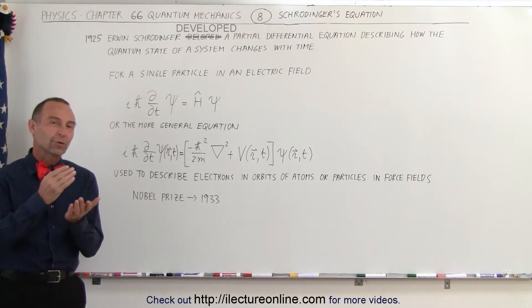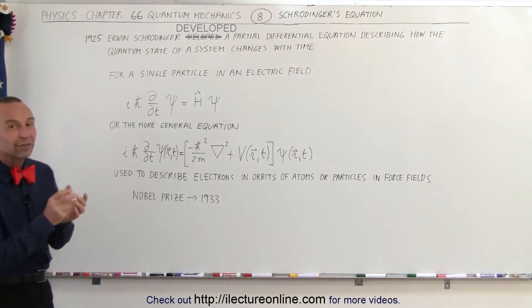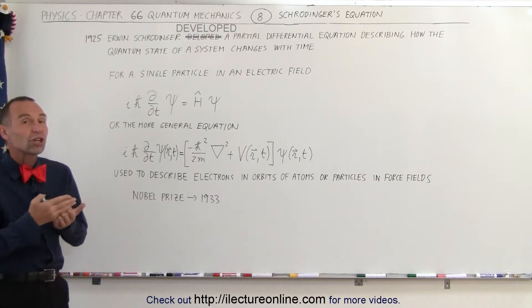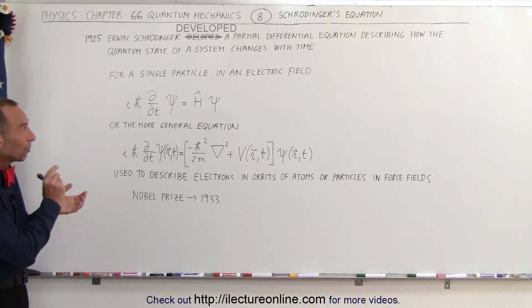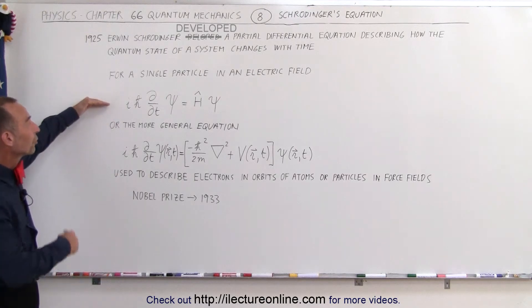Schrodinger was able to create an equation to describe the change of the state of a small particle like an electron in an atom based upon the change in time. So it was a partial differential equation describing the quantum state of the system. So here is the general equation for a single particle.